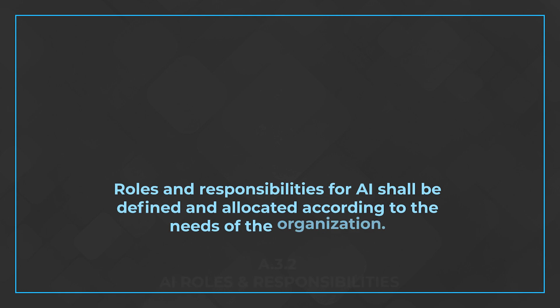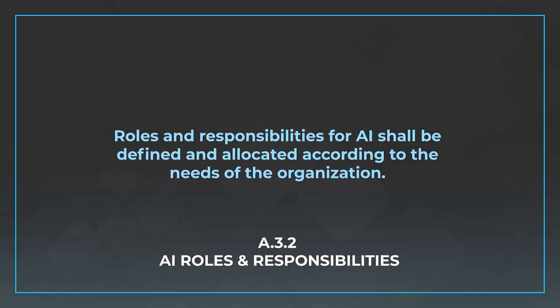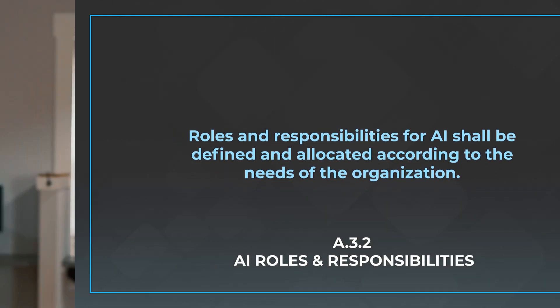Now there are two controls here that are pretty big — you need to really spend time thinking about these. The first control is A.6.3.2, AI roles and responsibilities. This is going to be a very large control on paper because you need to determine all of the parties within the organization responsible for doing all of the things that relate to the AI management system. The control language states: roles and responsibilities for AI shall be defined and allocated according to the needs of the organization.